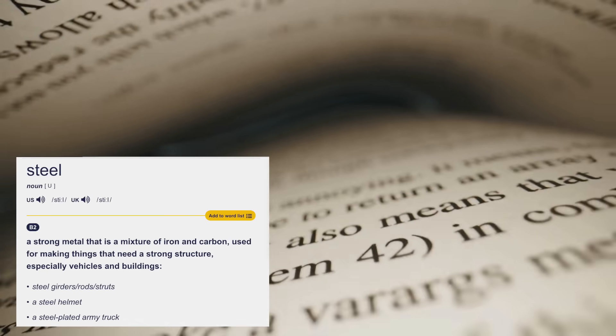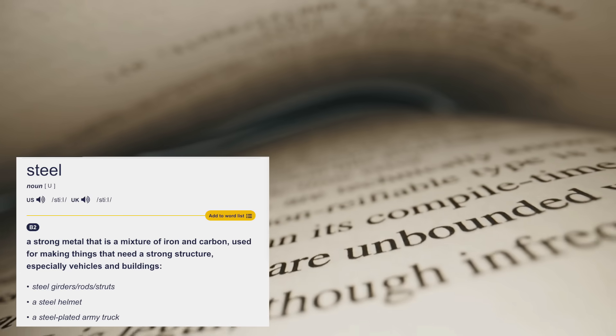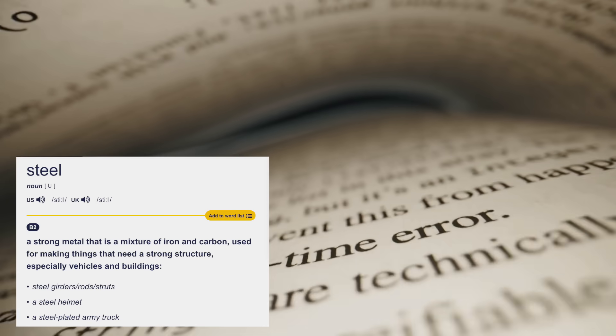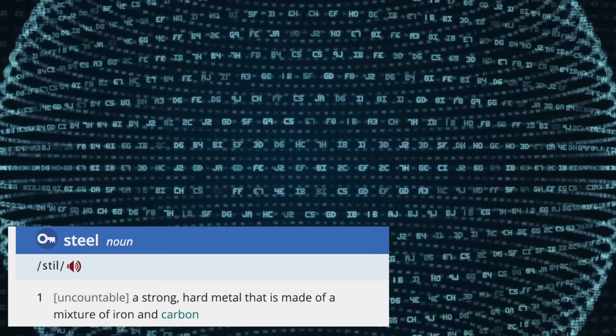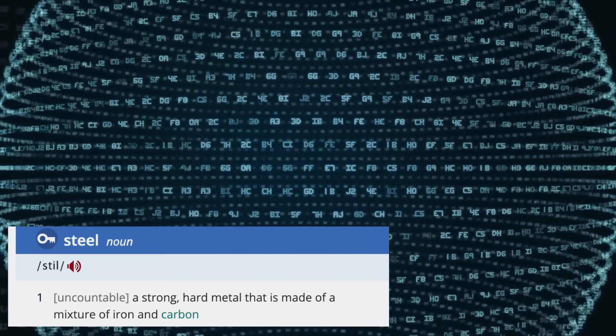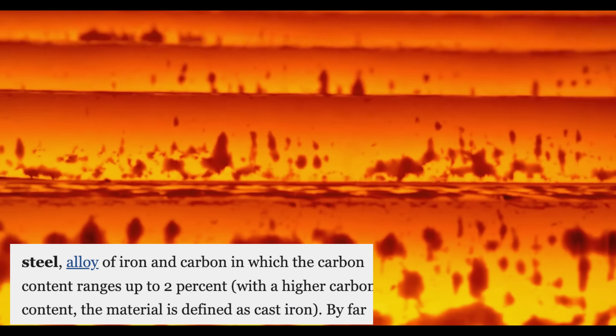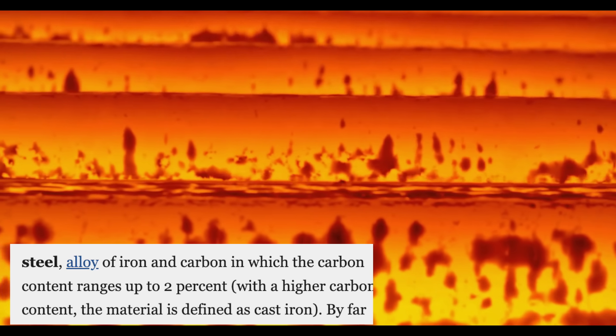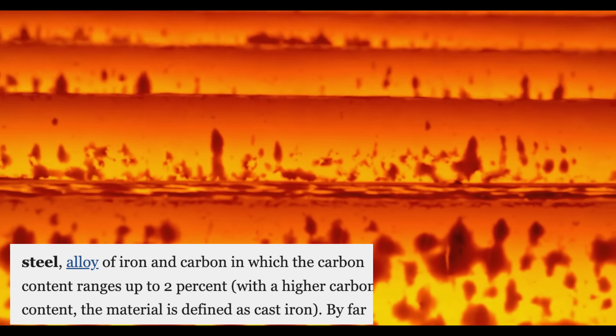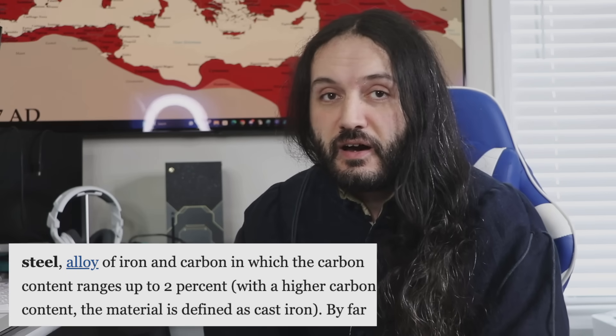Let's begin with the definition of the Cambridge Dictionary — which is a little generic. The Oxford definition reads: steel, noun, a strong hard metal that is made of a mixture of iron and carbon. On to Britannica: steel, metallurgy — an alloy of iron and carbon in which the carbon content ranges up to 2%, with a higher carbon content the material is defined as cast iron. Britannica is giving us a little more detail, but we need more.